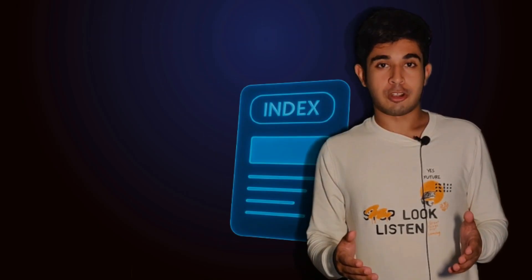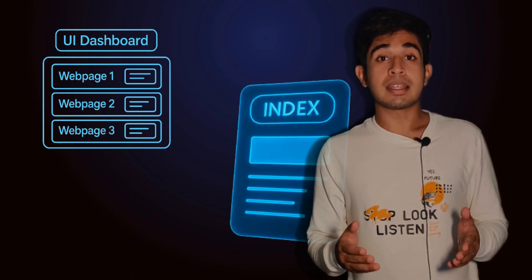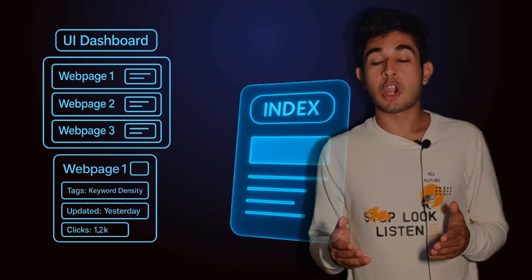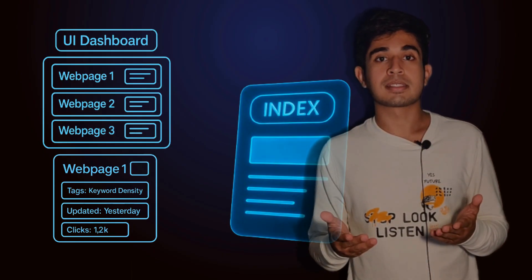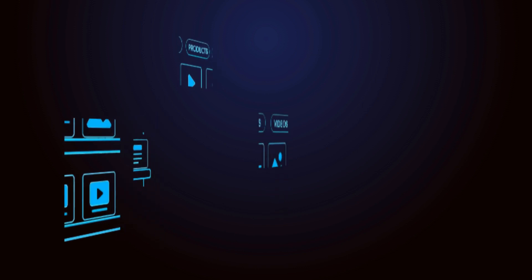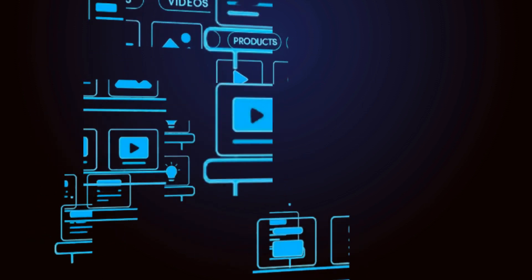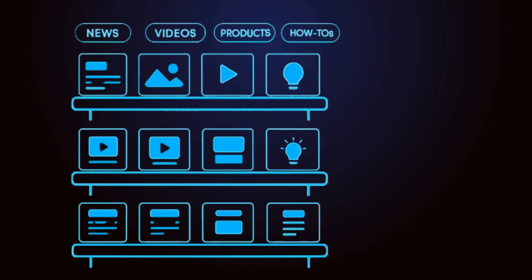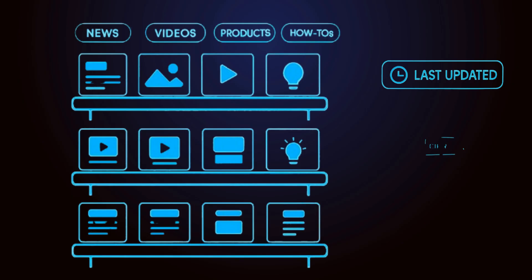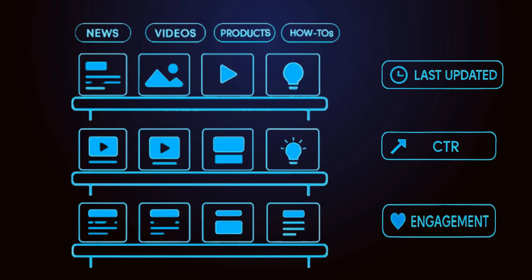Once a page is crawled, its contents are stored in something called the index. But this isn't just storage — it's a structured system designed to organize information in real time. Each page carries context: keywords, structure, freshness, and how users interact with it.